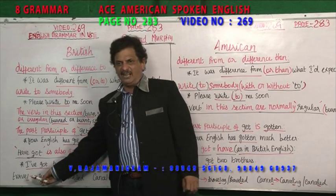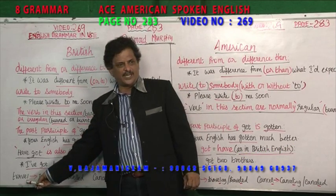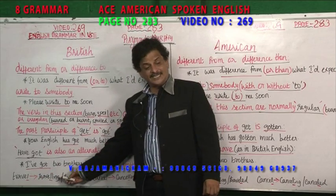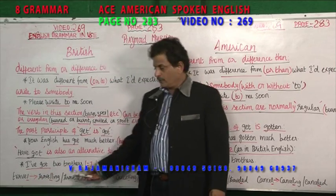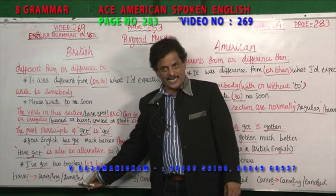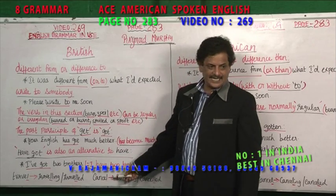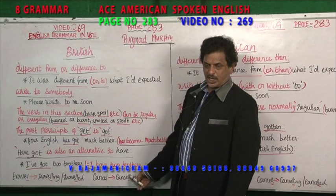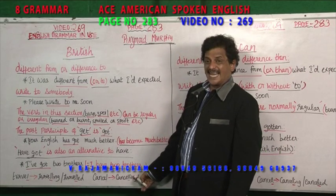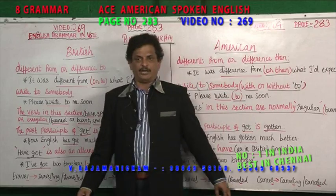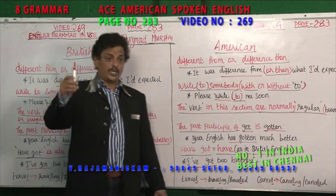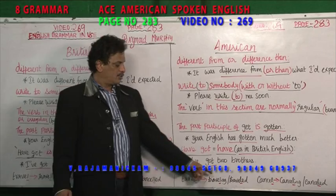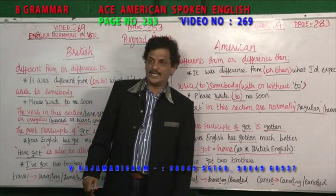The word "travel" ends with a single L. In British English, when you add "-ing" or "-ed", it becomes double L: "travelling", "travelled". Similarly, "cancel" becomes "cancelling" and "cancelled" with double L. But in American English, there is only one L: "traveling", "traveled", "canceling", "canceled".